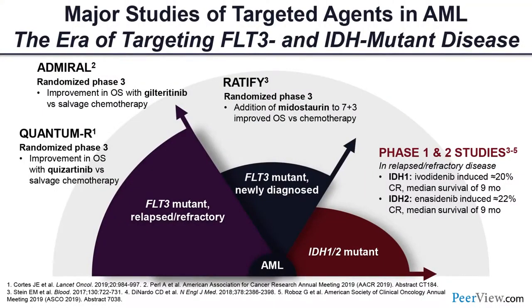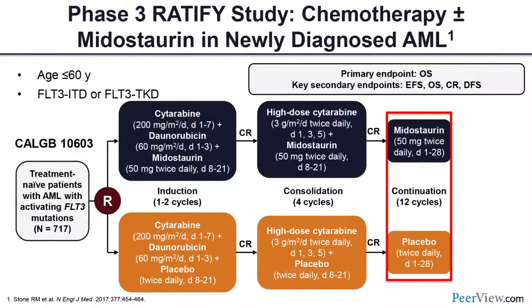Q&A: Should we report FLT3 allelic ratios in all cases? Yes, ideally we should. People with high allelic ratio, especially without NPM1 mutation, are clearly unfavorable and the goal is transplant. For FLT3 ITD testing at relapse: we repeat it at all relapse time points before selecting therapy. Being an academic center, we do it at every time point — we follow FLT3 PCR to identify whether PCR eradication is associated with improved outcome, and it seems to be. At minimum, check it at the time point of changing therapy so you don't miss something.